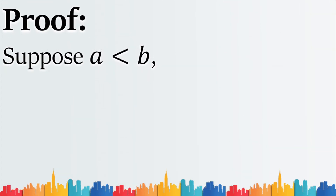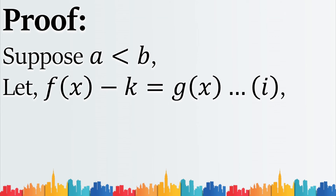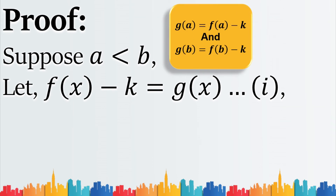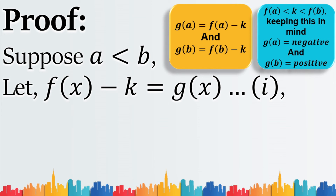To start the proof, we suppose a is less than B, since the statement of Bolzano's theorem does not specify whether a is less than or greater than B, so we take both cases one by one. As a is less than B, we let a function G(x) equal F(x) minus K. We can see that G(a) equals F(a) minus K and G(b) equals F(b) minus K. By the supposition from the statement that F(a) is less than F(b), we are certain that G(a) is negative and G(b) is positive.